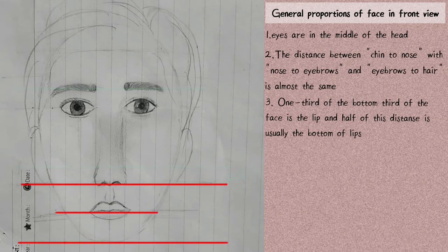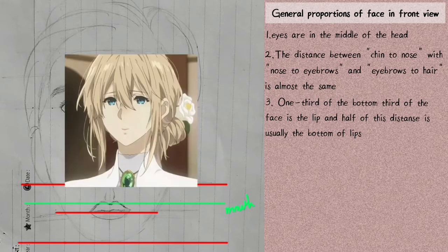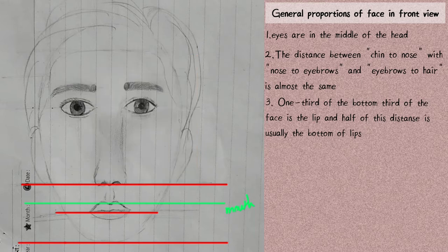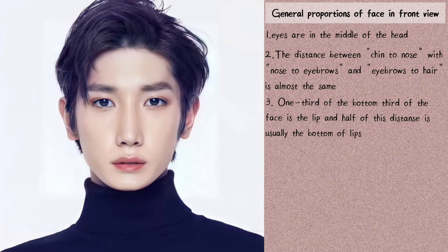Another mistake is drawing the mouth at half the distance from nose to chin, which makes the chin shorter. It should be one third of that section, and the bottom of the lips is halfway down from there. This proportion might work for stylized drawing like anime, but for realistic portraits don't do that, otherwise you end up with something that looks off.